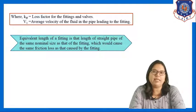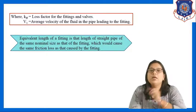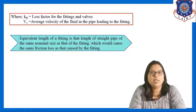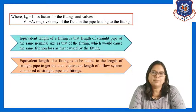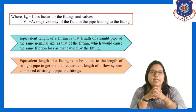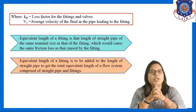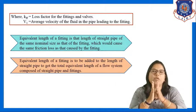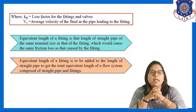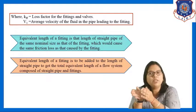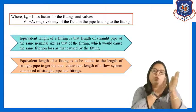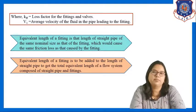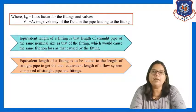The equivalent length of a fitting is that length of straight pipe of the same nominal size as the fitting which would cause the same friction loss as caused by the fitting. The equivalent length of the fitting is to be added to the length of the straight pipe to get the total equivalent length of the flow system.